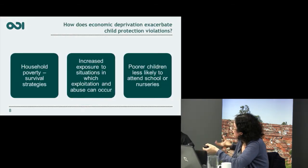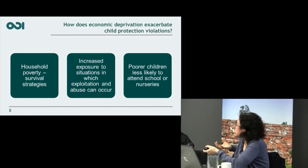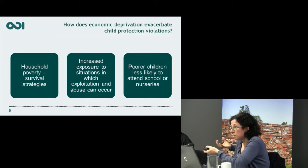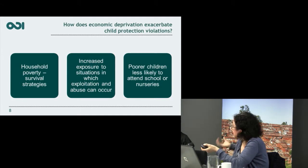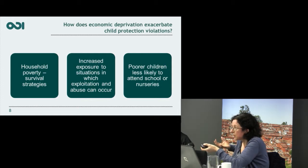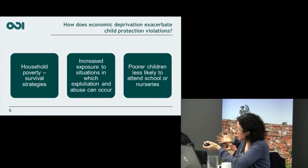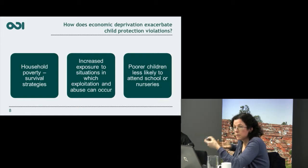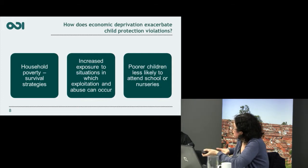How does economic deprivation increase children's risk of protection violations? Firstly, through survival strategies, such as marrying off a daughter because you don't have enough money to feed her, or encouraging a girl to go out and get money for her school fees through transactional sex. And of course that may be the young person's own decision as well — it's not only parents forcing their children to do these things.